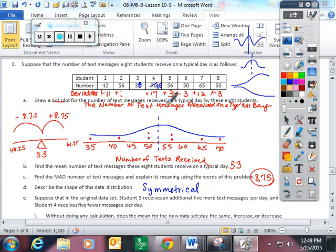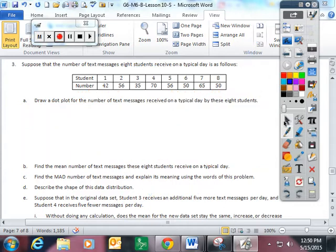Without doing any calculations, does the mean for this new data stay the same, increase, or decrease? Without doing any calculation, I think the mean is going to stay fairly close. Actually, it is going to stay exactly the same because this is a balance. It's plus five, minus five. Now, if we added seven here and eight here, your average would go up because you're adding to both of them. So that would be question E.